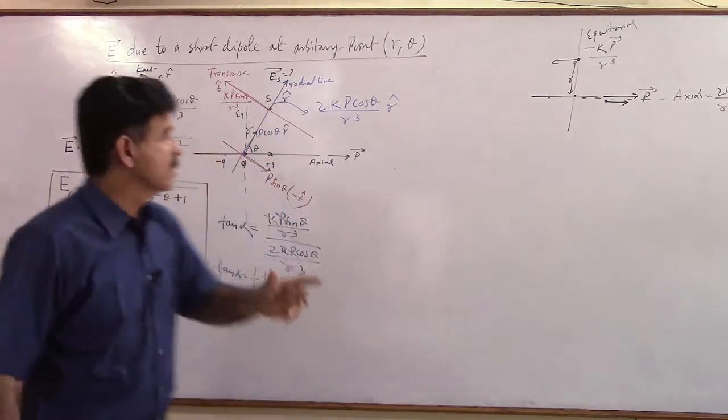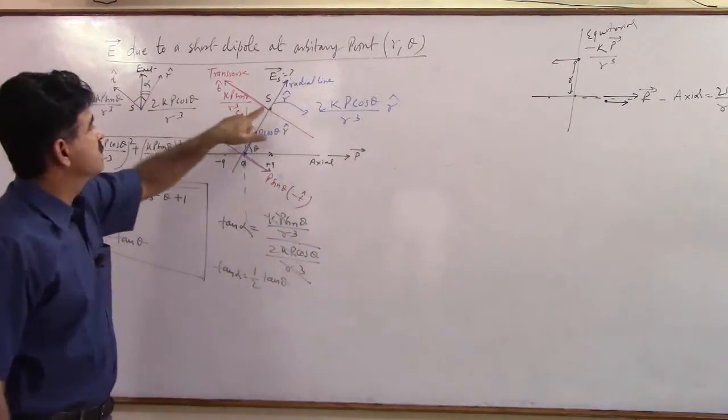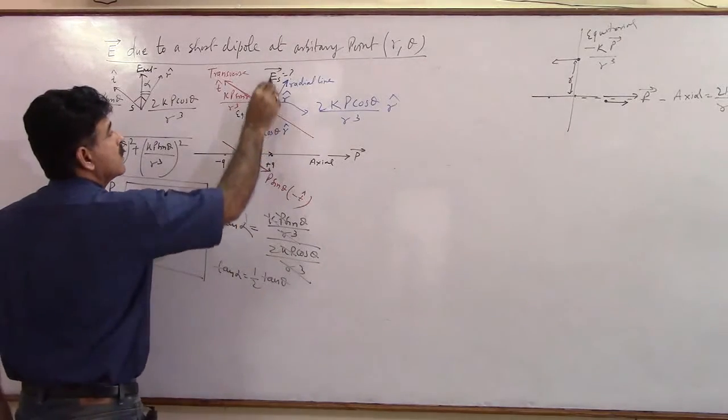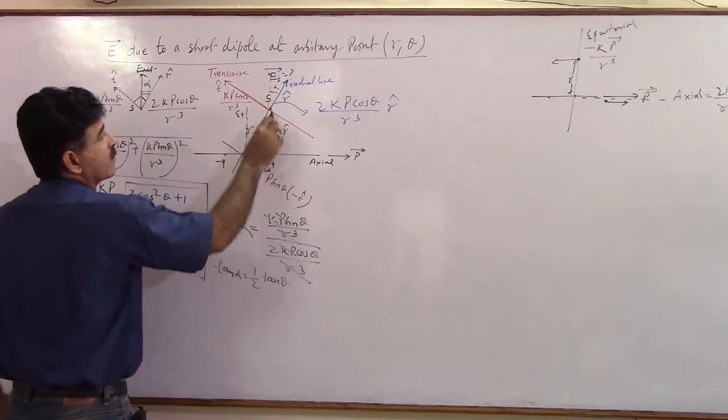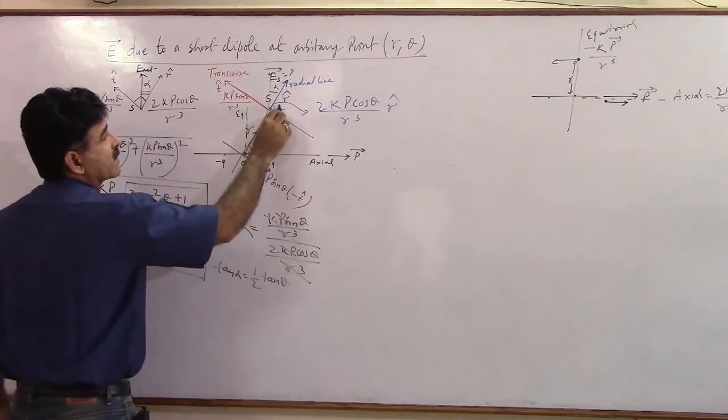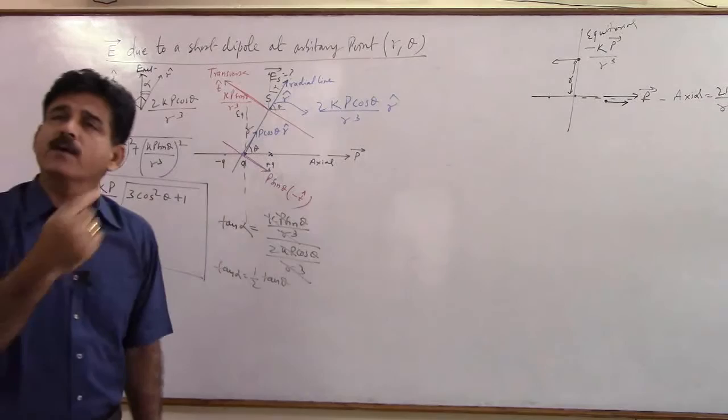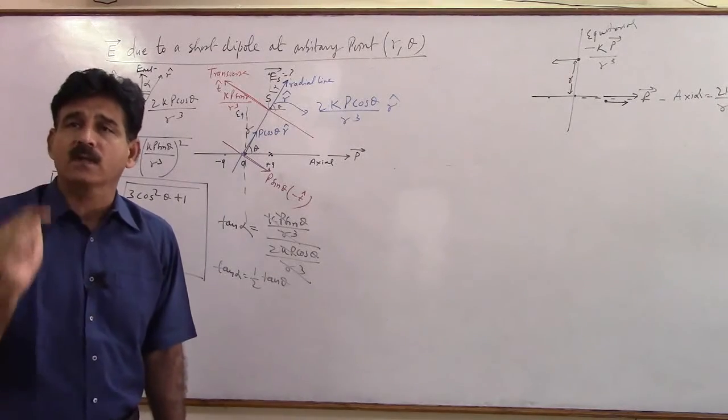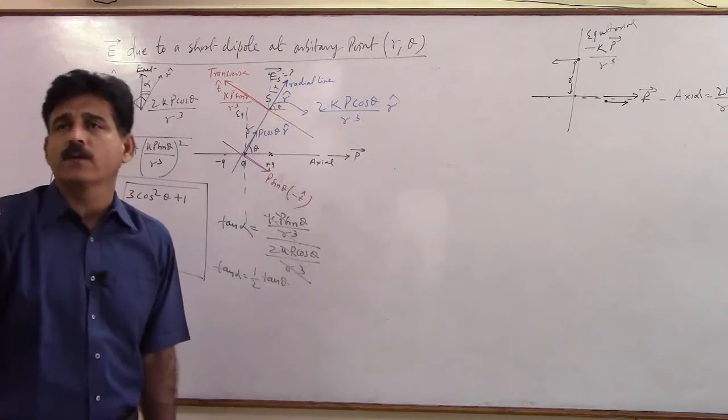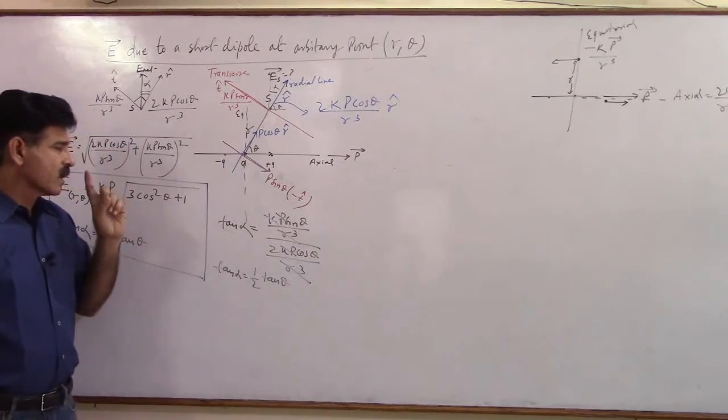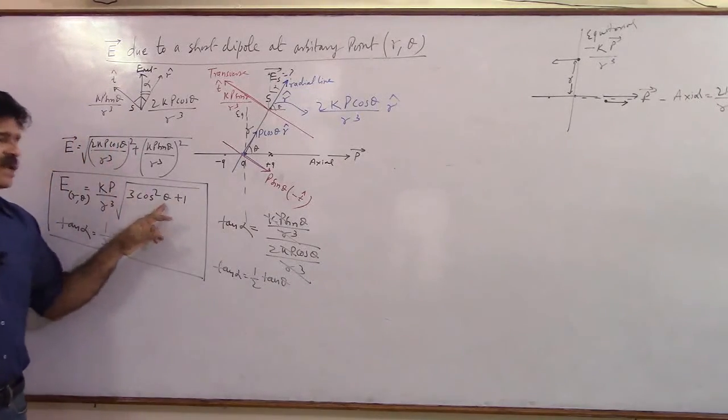So the net field's angle with the axis will be what? You will say that is simple. If this is alpha here, the net field which you get because of the two, and this is already theta, the total angle will be alpha plus theta. Very good numericals are made on this.